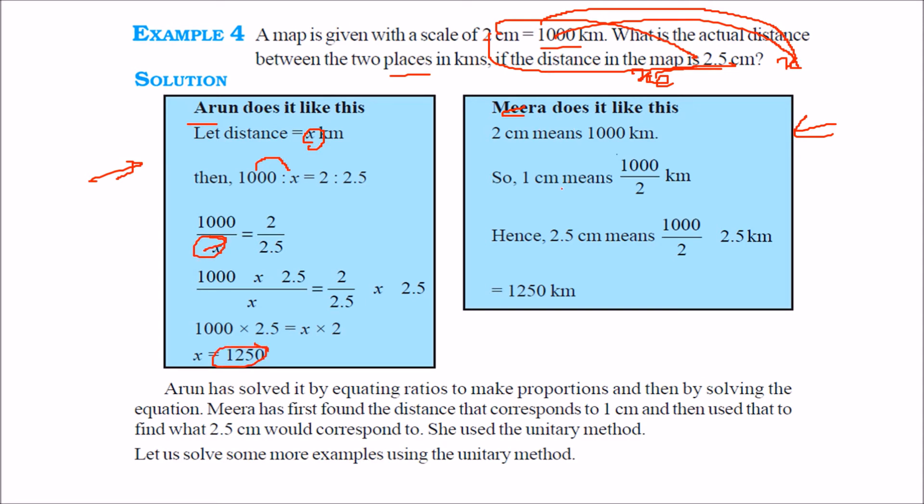But Mira took another way. She said if 2 cm means 1000 km, 1 cm means 1000 by 2 km. So what about 2.5 cm? Multiply it by 2.5. Just she did that and she got the same answer. This is the unitary method. So you can get the idea that there are so many methods to solve. One is the direct proportion method, one is the unitary method.